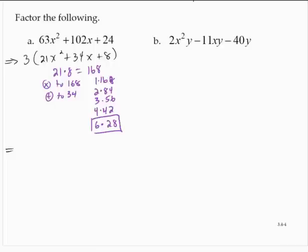So I'd have 3. And what I like to do now is, since I'm going to do some more work on the inside, I'm going to use brackets now instead of parentheses. 21x squared plus 6x plus 28x plus 8.